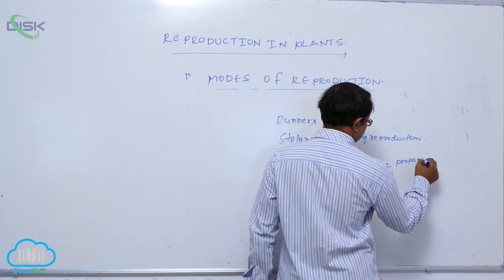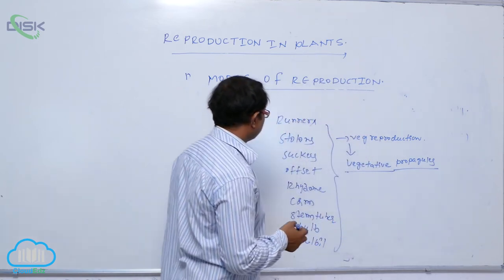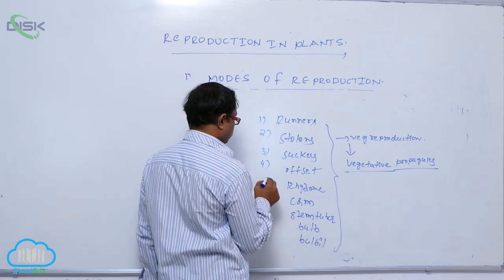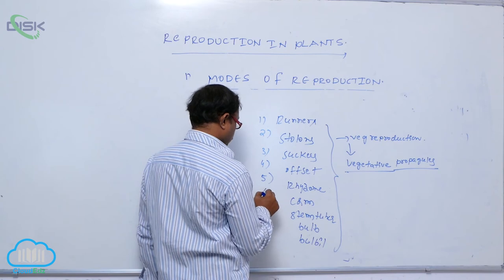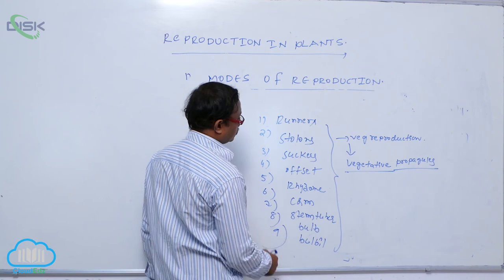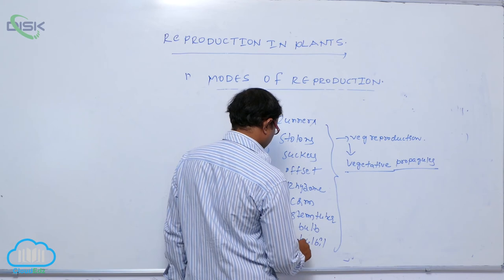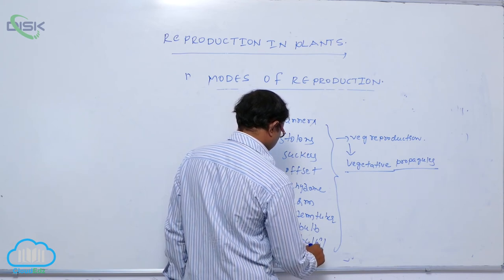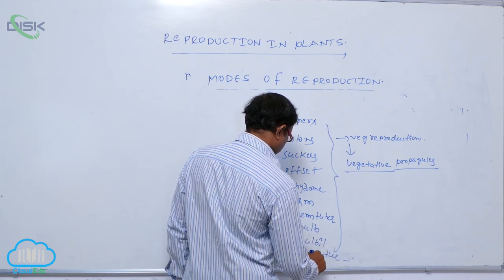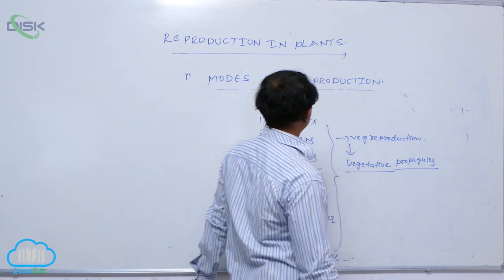They are vegetative propagules involved in vegetative reproduction to produce new plants: runner, stolon, sucker, offset, rhizome, corm, stem tuber, bulb, bulbil, and reproductive leaves like bryophyllum.